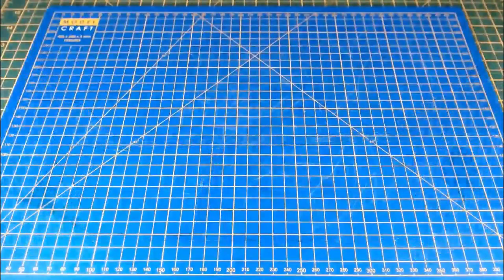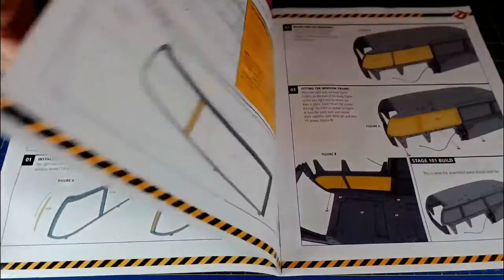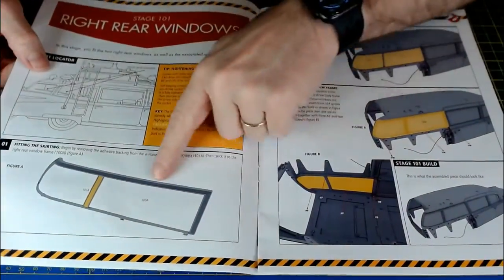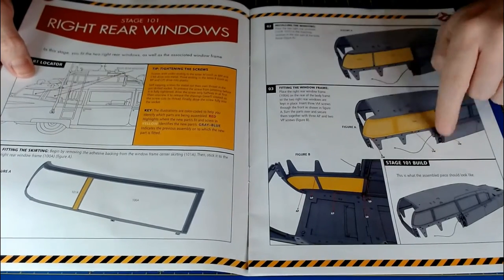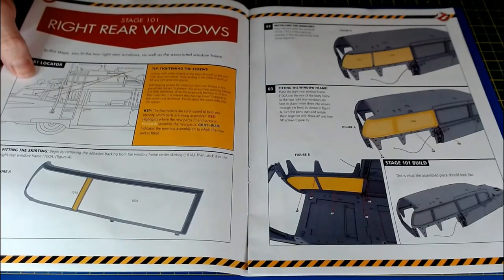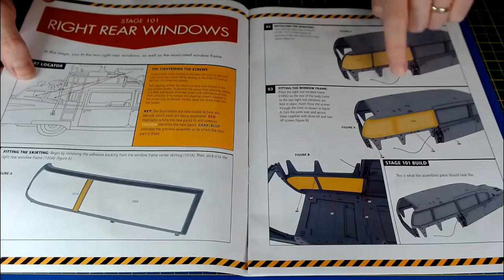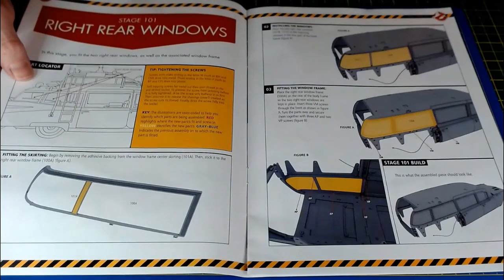Okay, so that was it for stage 100. Stage 101, just going to fit that onto the model, onto the main part of the car and the windows by looks of things. Yeah, so it's that framing and the rear windows that'll be going to go on in stage 101.